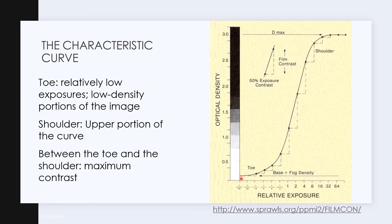The slope of the curve represents the contrast characteristic and we have mainly three parts. We have the toe which is mainly base plus the fog density. Then we have the shoulder and somewhere in between these two.